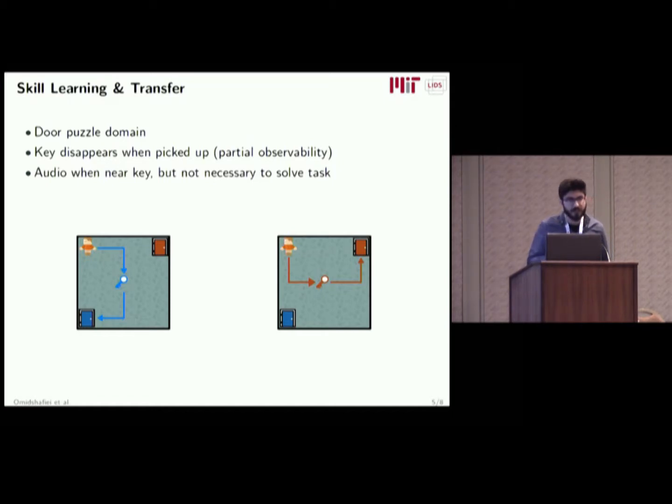This is one of those domains. We have a door puzzle domain where the agent spawns in a room with two doors. There's a key in the middle of the room with a key color observable indicating the correct door. All the agent has to do is pick up the key, remember the key color because the key disappears after that point, and then open the correct door. We play a little bit of audio near the key, but it's not actually necessary for solving the task.